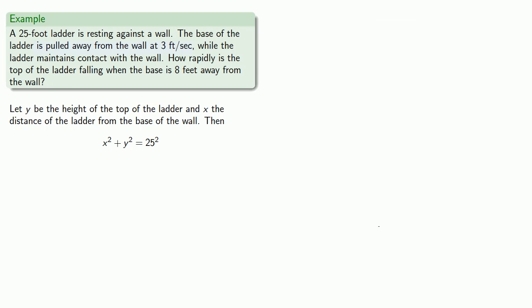So we're told that the base of the ladder is pulled away from the wall at three feet per second. And so this is a rate of change of x with respect to time and so we're differentiating with respect to time t.